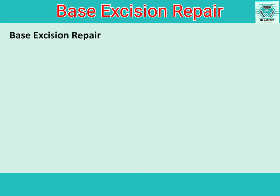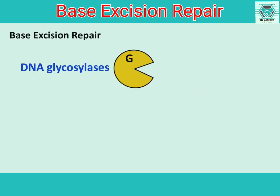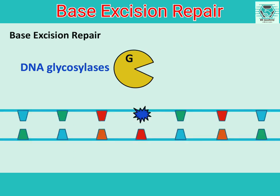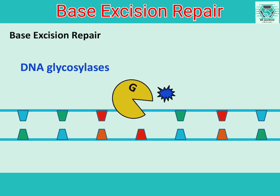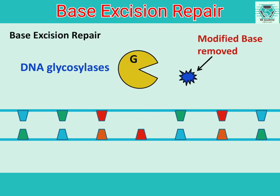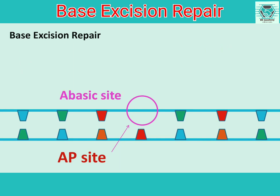Today I will show you how it happens. The enzyme involved in this mechanism is DNA glycosylase. It identifies the modified base and removes it out of the double helix. The empty region in the DNA where the base has been removed is called an AP site. AP means abasic site, which means it is devoid of any purine or pyrimidine base.